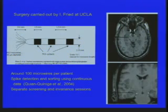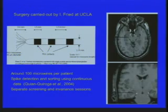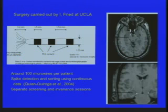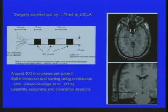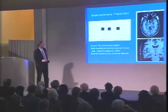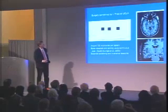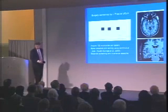Now what Itzhak Fried did with his collaborators: he hollowed out this electrode and added nine wires — conventional microelectrodes, just like Earl Miller is using in his monkey or Matt Wilson is using in rats and mice. So now we have roughly on the order of 100 microwires in these patients.